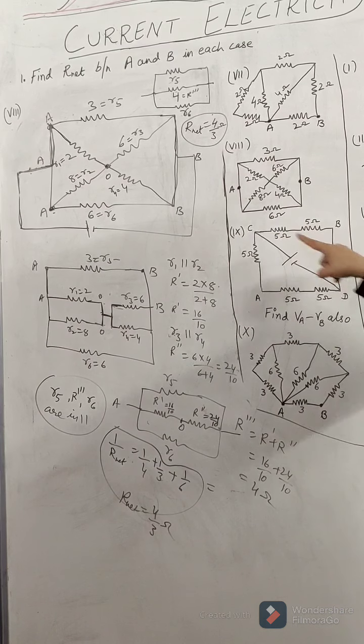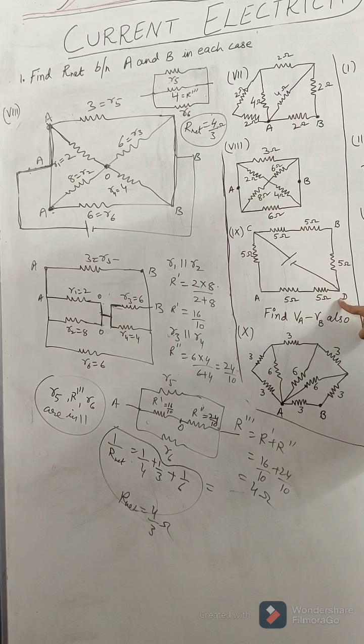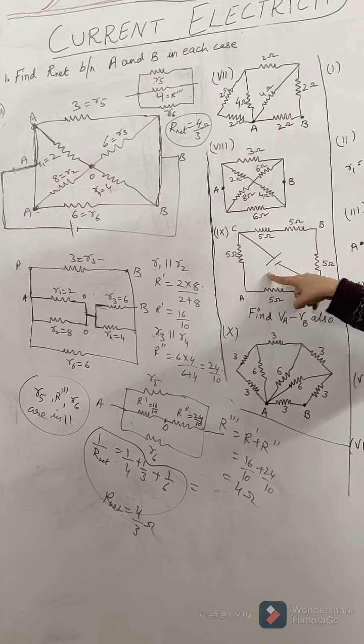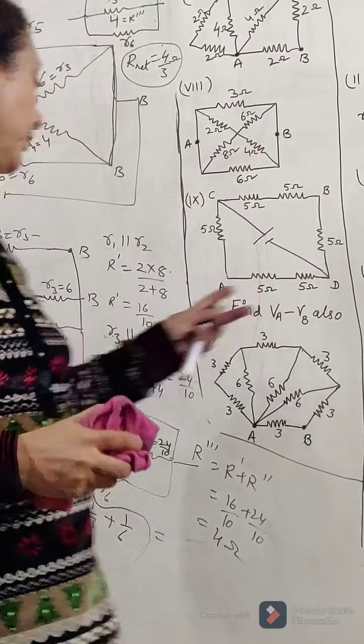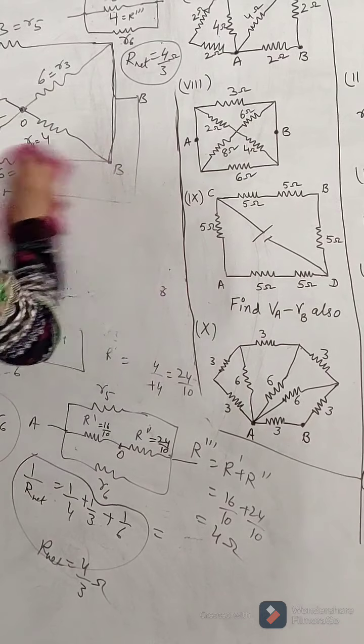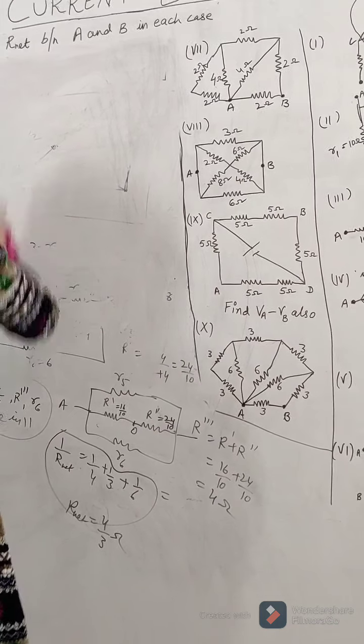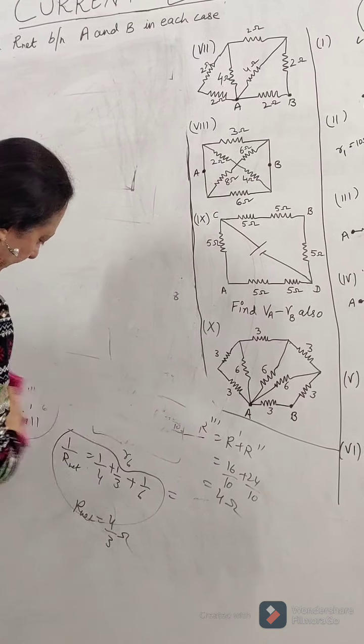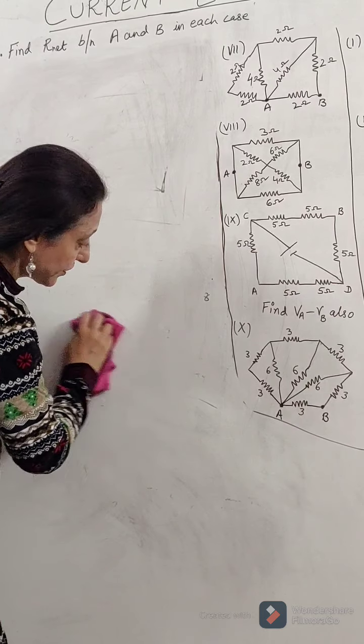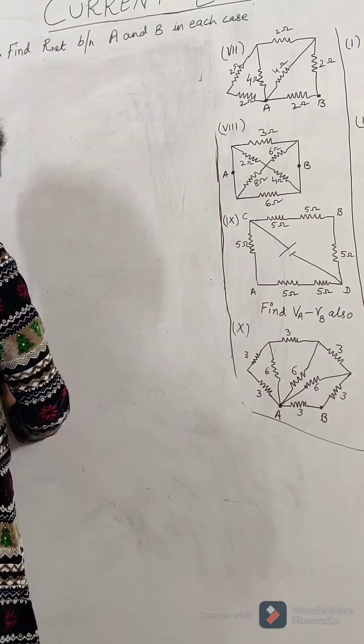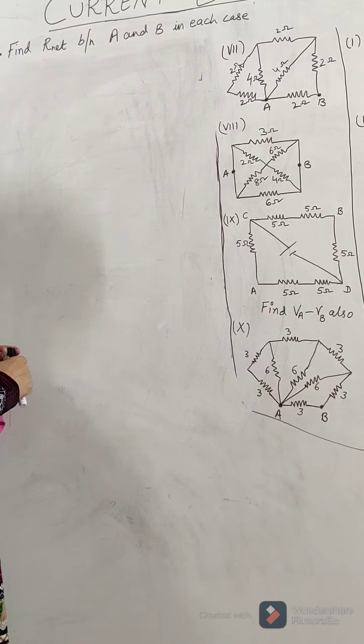C to B to D: 5 plus 5 plus 5, because current has no other way to go, so these three resistances are in series. Similarly C to A to D: 5 plus 5 plus 5. This is also three resistances in series. So 15 ohm, 15 ohm, they are in parallel. So result will be 15 by 2 ohm. To find the net resistance in this case is not a difficult job at all. But to find VA minus VB will require a little bit of common sense over here. You have to divide the voltage because actually we have not done any questions to find the potential difference. Potential difference questions I will cover in the next video.